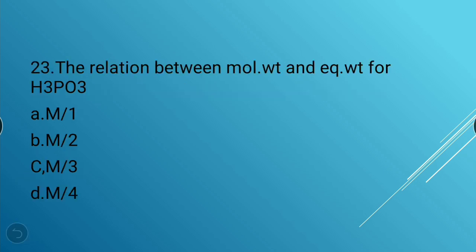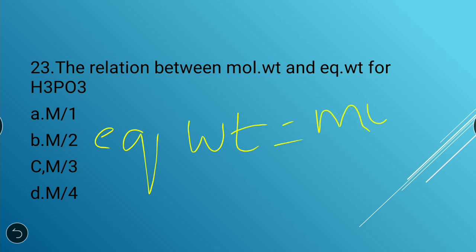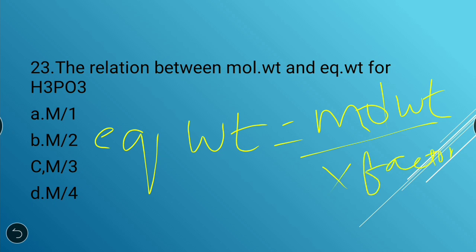Next question: The relation between molecular weight and equivalent weight for H₃PO₃. Equivalent weight = molecular weight ÷ x-factor. The x-factor (basicity) of H₃PO₃ is 2, so equivalent weight = M/2.